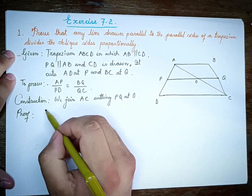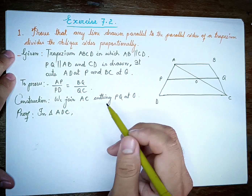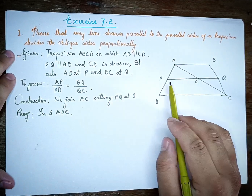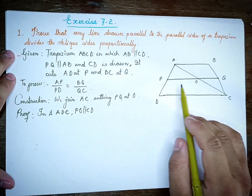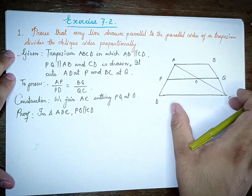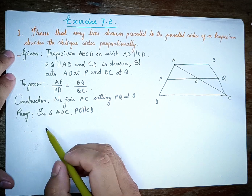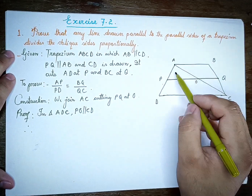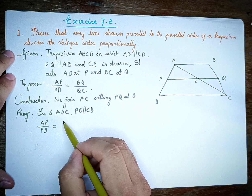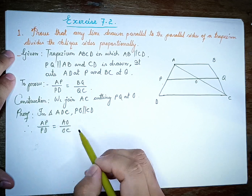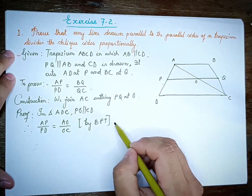This is the triangle in the same ratio. So if you want to see, it will be PO and CD. PO and CD will be the same. Therefore, AP by PD is equal to AO by OC. So AP by PD is equal to AO by OC. This is equation number 1.